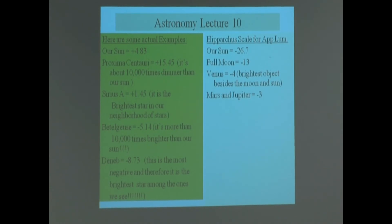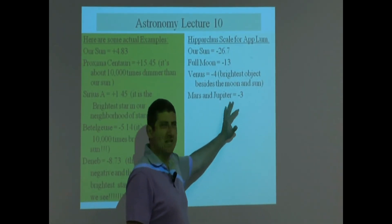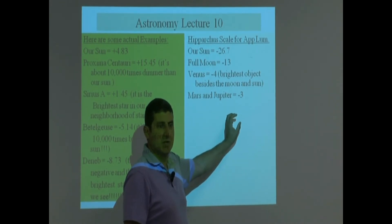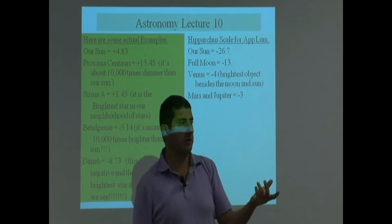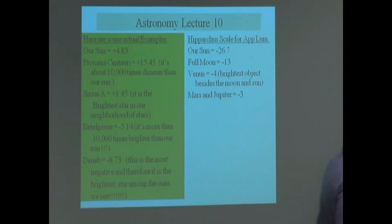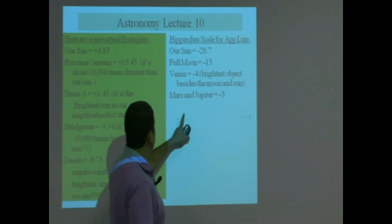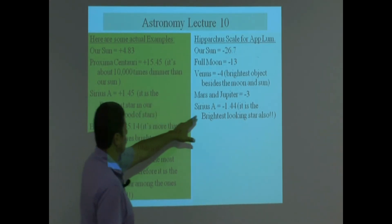Venus, Mars, and Jupiter are the brightest planets on the apparent scale. Uranus and Neptune are going to be beyond the naked eye limit — you need a telescope to see them, so they're all the way on the dim end. Sirius A appears at negative 1.44 on the apparent magnitude scale — it is the brightest star in our neighborhood and also the brightest-looking star in the sky, bar none.